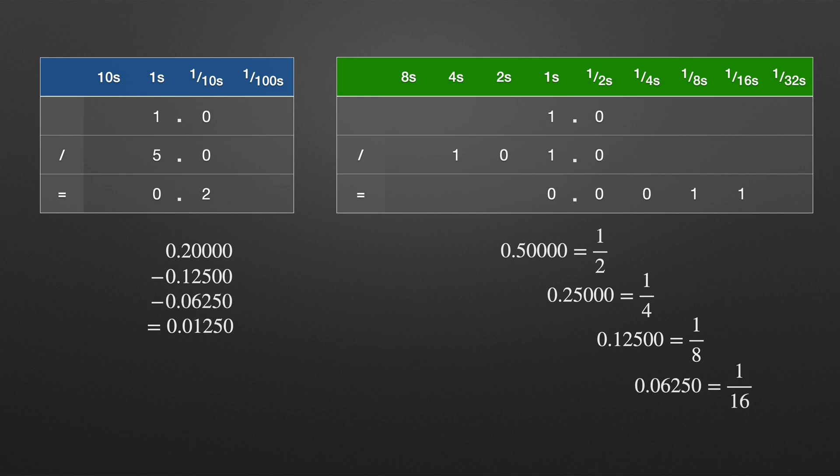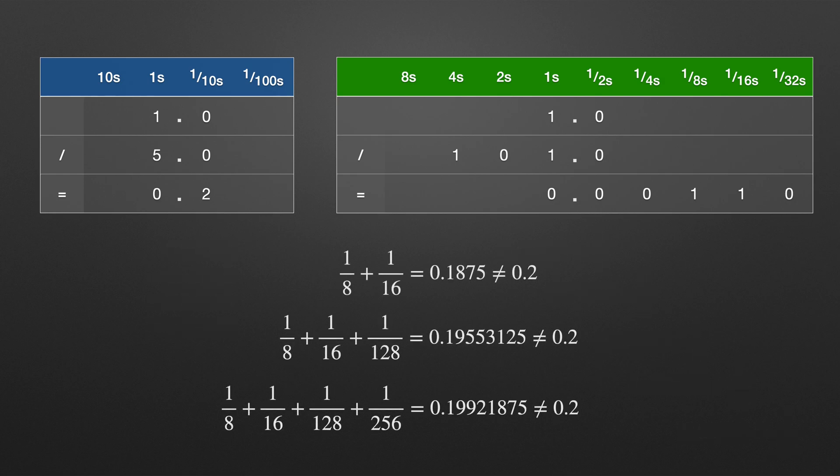Sixteenths, 0.0625, yep there's one of those and that gets us down to 0.0125. 1 over 32, that's 0.03125 and we're too big again. And there's me thinking 1 divided by 5 was the easier example. If we kept going with this we'd actually find that we can't exactly represent 0.2 in binary. We can get closer and closer the more places we add to the binary fraction but we'll never reach it exactly.